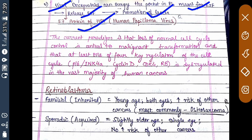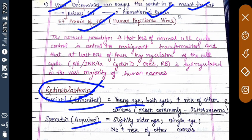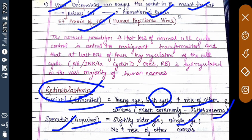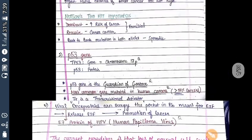Retinoblastoma can be of two types: inherited (familial) or acquired (sporadic). Inherited retinoblastoma occurs at a young age, affects both eyes, and carries an increased risk of other cancers — most commonly osteosarcoma. Acquired retinoblastoma occurs at a slightly older age, involves a single eye, and does not carry this increased risk of other cancers. Both are associated with the RB protein.